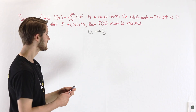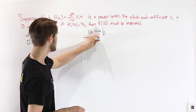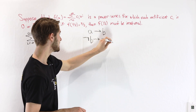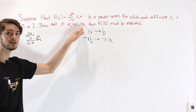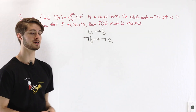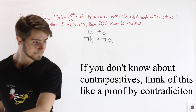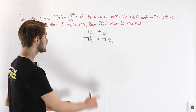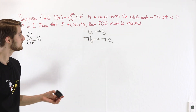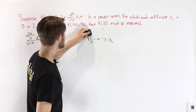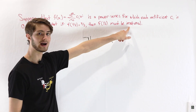"a implies b" is the same thing as "not b implies not a." This is called the contrapositive, and one way we can prove the original statement is by proving the contrapositive instead. Proof by contradiction is also a related idea here. So we want to start with not b and try to get to not a — in other words, we're going to start by assuming that f(1/2) is rational.